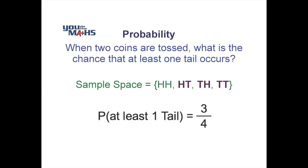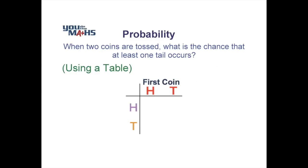So we used a tree diagram to work out those probabilities. Let's have a look at the same problem, but this time we'll use a table. We set up a table as follows: the top of our table represents the possibilities from the first coin — heads and tails. Down the left-hand side, head and tail represents the second coin. Inside the table we'll fill in the spaces representing the possibilities from the first coin, and we've done that here in red.